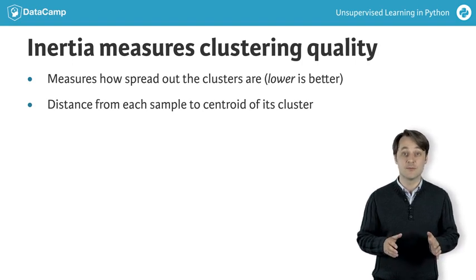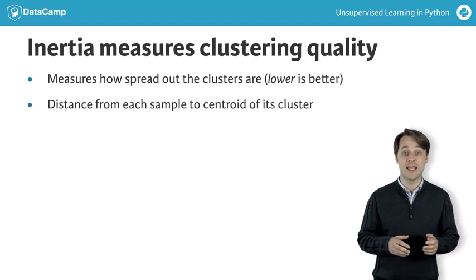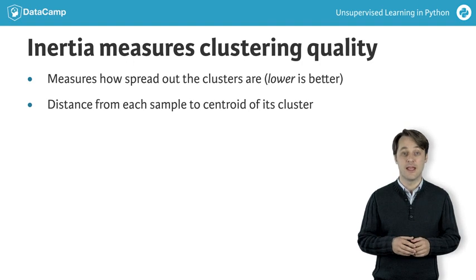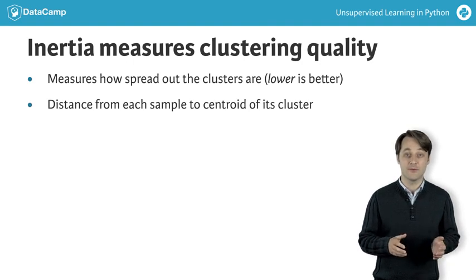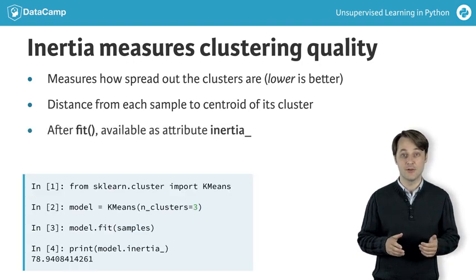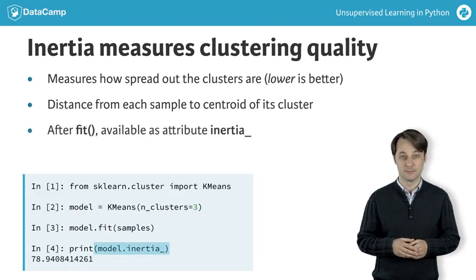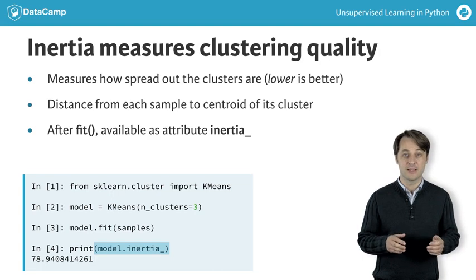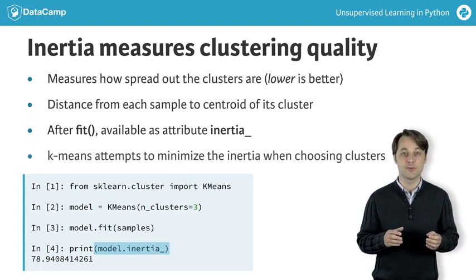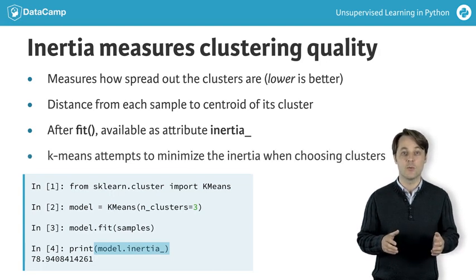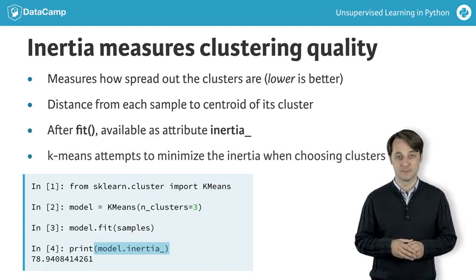The inertia of a K-means model is measured automatically when any of the fit methods are called, and is available afterwards as the inertia attribute. In fact, K-means aims to place the clusters in a way that minimizes the inertia.